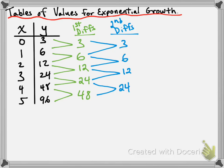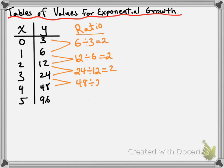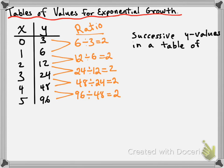So if you can't check whether something is exponential growth from the first or second differences, what can you do? Instead of taking first and second differences, we look at a ratio between successive y values. For example, 6 divided by 3 is 2; 12 divided by 6 is also 2; 24 divided by 12 is 2; 48 divided by 24 is 2; and 96 divided by 48 is also 2. We have a common ratio between successive y values. You can tell if a table of values describes an exponential growth problem if successive y values have a common ratio.